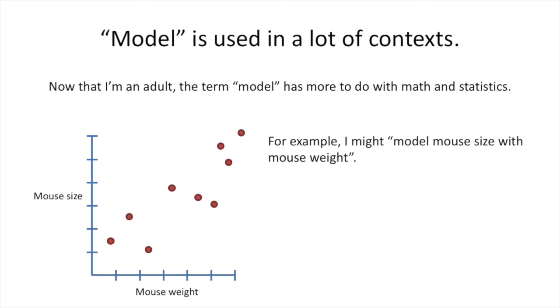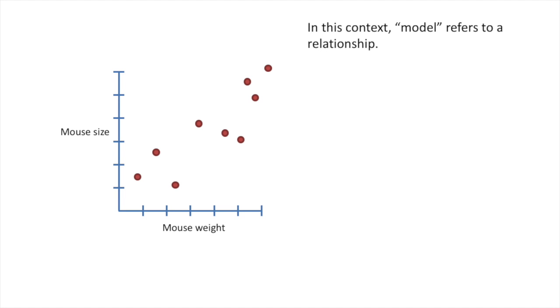For example, I might model mouse size with mouse weight. What does this mean, and why would I want to do this? In this context, model refers to a relationship.